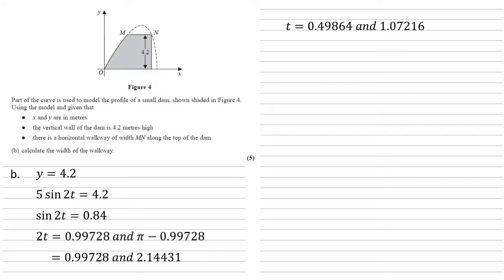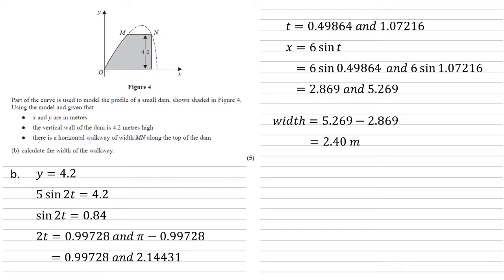We can now work out the x from our parametric equation for x. So x is equal to 6 sine t. Putting our answers in gives us x values of 2.869 and 5.269. So they're the x values of M and N. So the width is 5.269 minus 2.869, which is 2.40 metres. Very important that we've got the m for metres on there, getting the units correct.